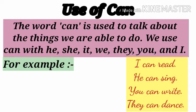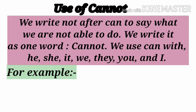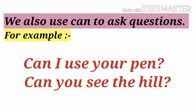We write 'not' after 'can' to say what we are not able to do. We write it as one word: 'cannot'. We use 'cannot' with he, she, it, we, they, you, and I. For example: I cannot read, he cannot sing, you cannot write, they cannot dance.